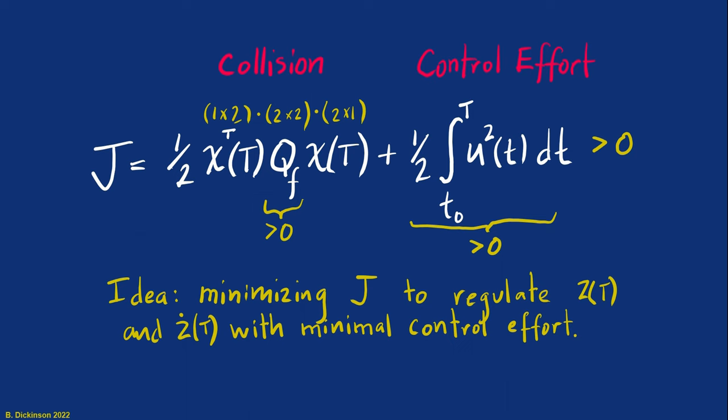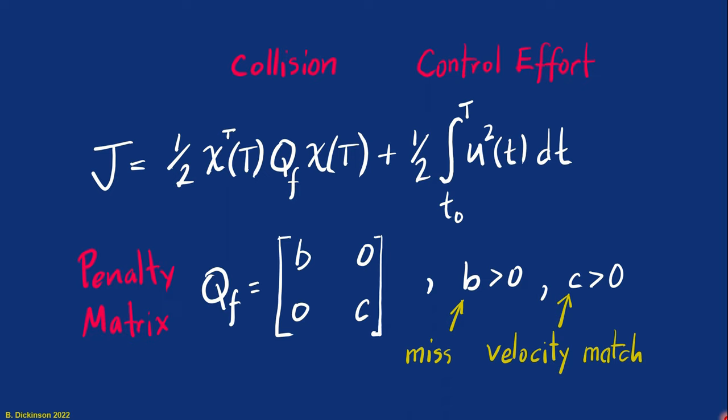Let's expand a little more on the matrix Q F. So it's something called a penalty matrix. And the penalties specifically are these two scalars B and C along the diagonal of Q F. They're positive because the matrix has to be positive definite. And obviously they're going to correspond to the relative position and the relative velocity terms in the state vector X. So at the final time, if the collision term is minimized to zero, then not only do we hit, but the velocity of the pursuer and target are the same.